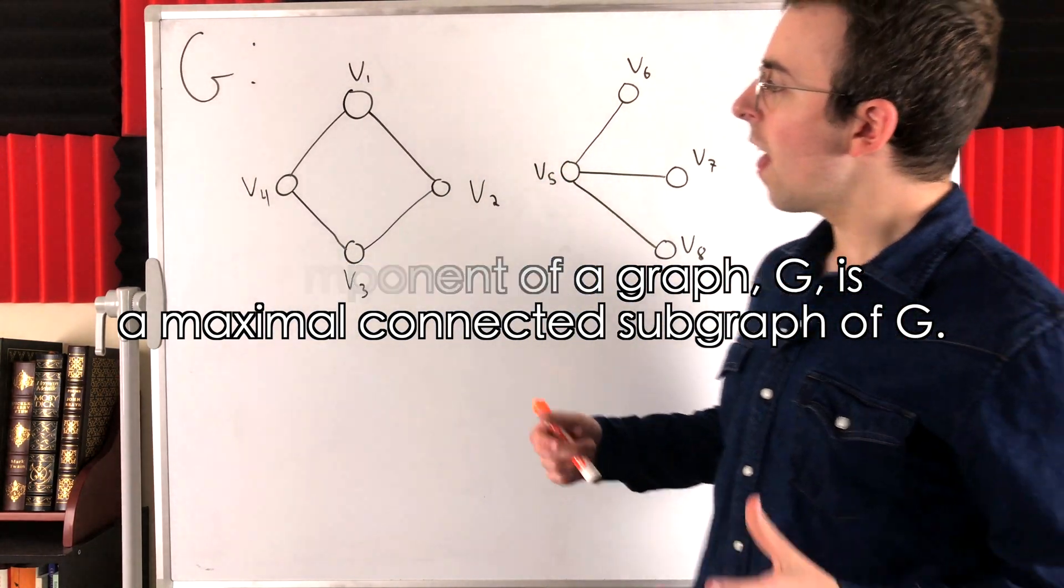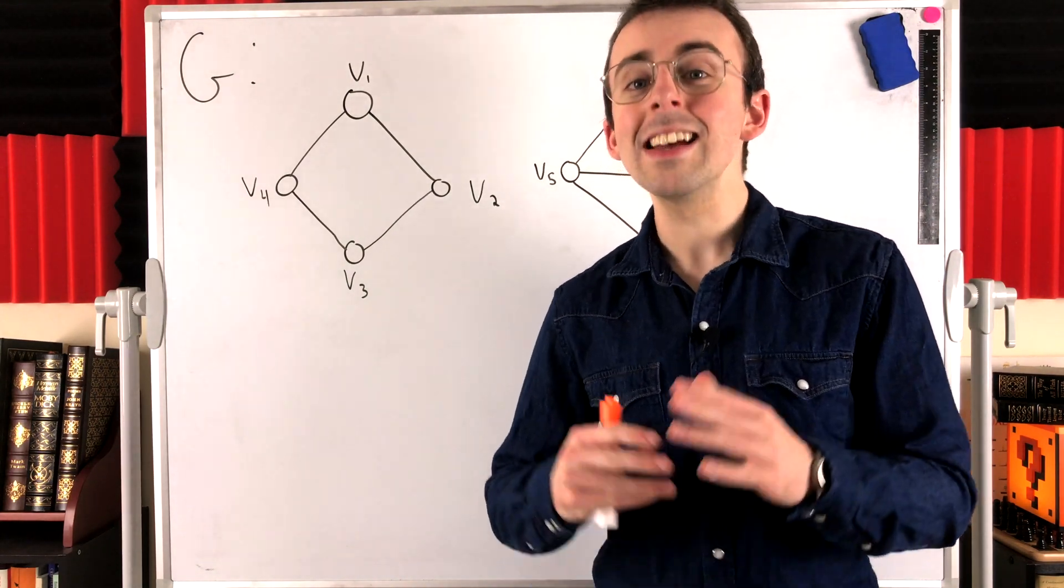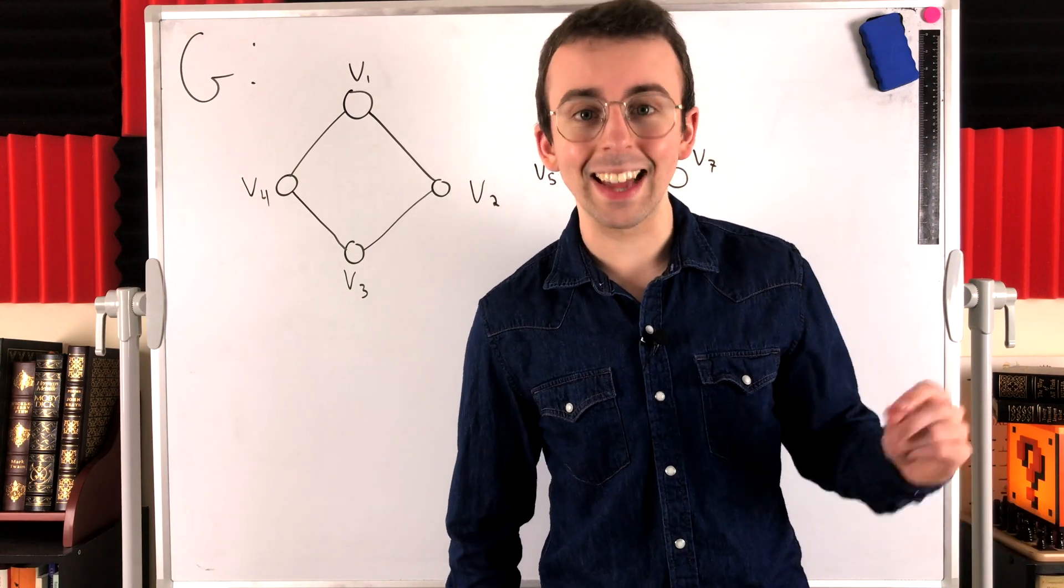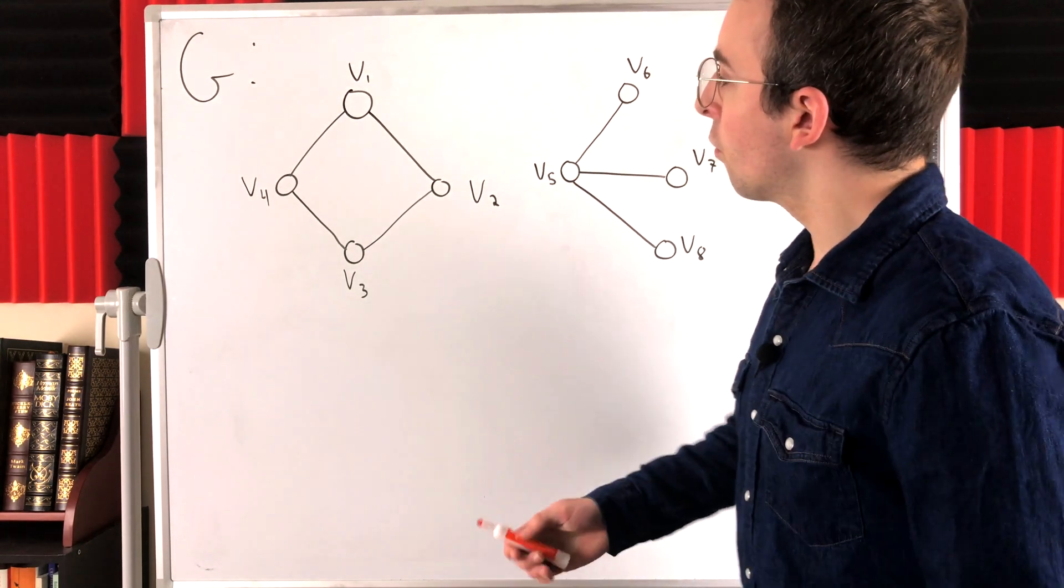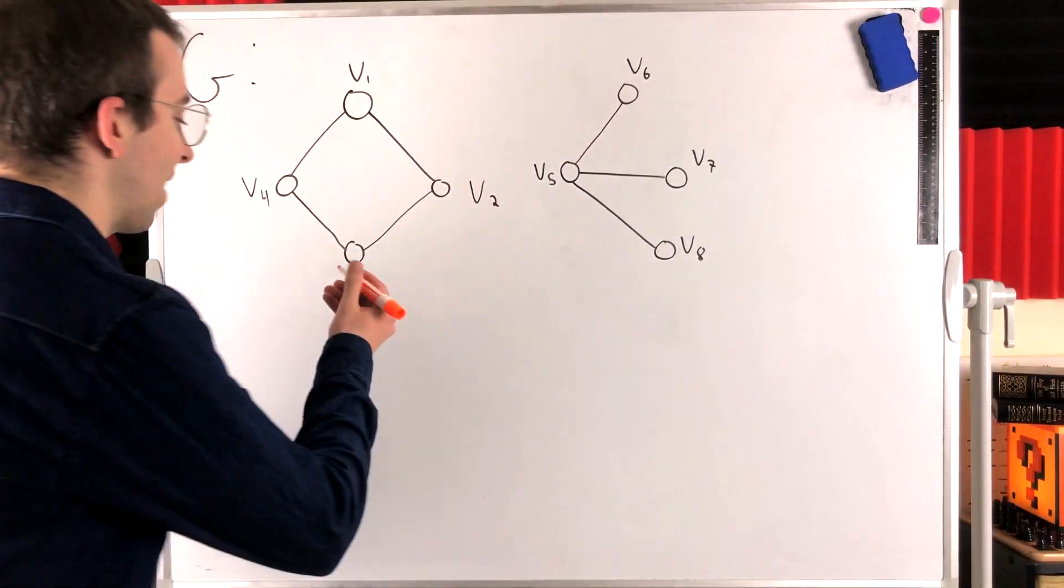And what does that mean? Well, it just means that a component of G is a connected subgraph of G that is not a proper subgraph of any other connected subgraph of G. For example, or rather, for a non-example, to help clarify that definition.